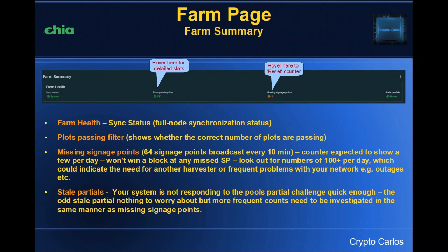What you need to make sure is that number is not incrementing drastically. If you're getting numbers going up to 100 per day, this shows there are severe problems — those could be network outages, broadband problems, or it could mean the size of your farm is getting too big and your harvester is overburdened, meaning you need to think about splitting some drives onto another harvester. There's a reset option if you hover over here, so you can reset it daily — and we'll go through what you should really do with that in the summary.